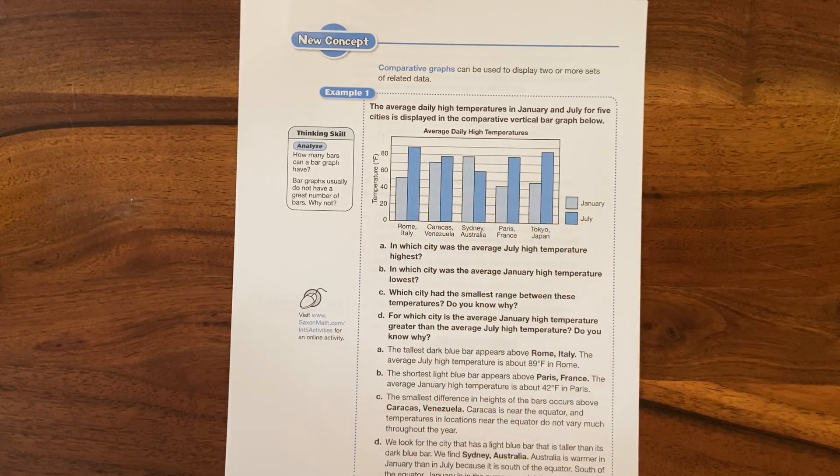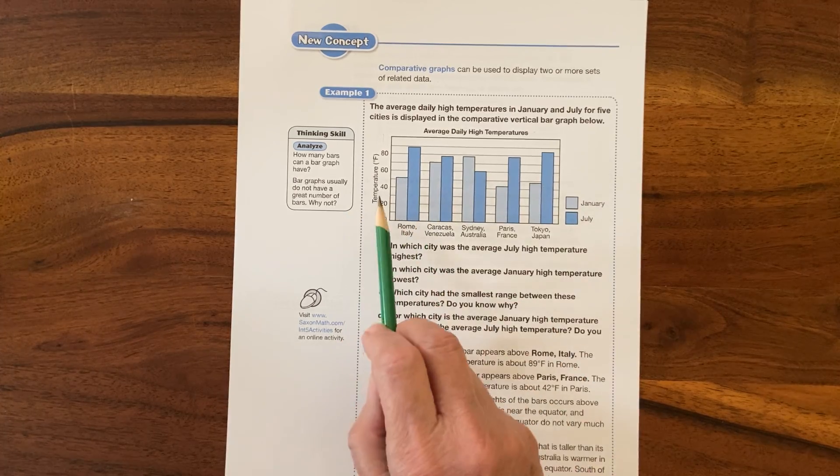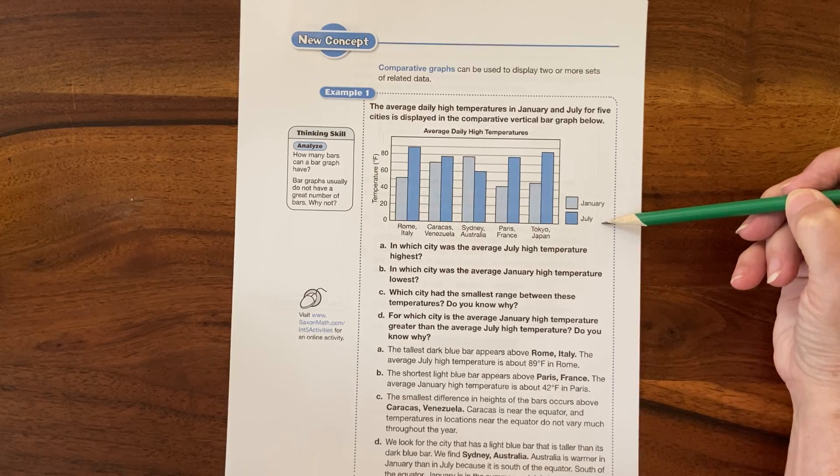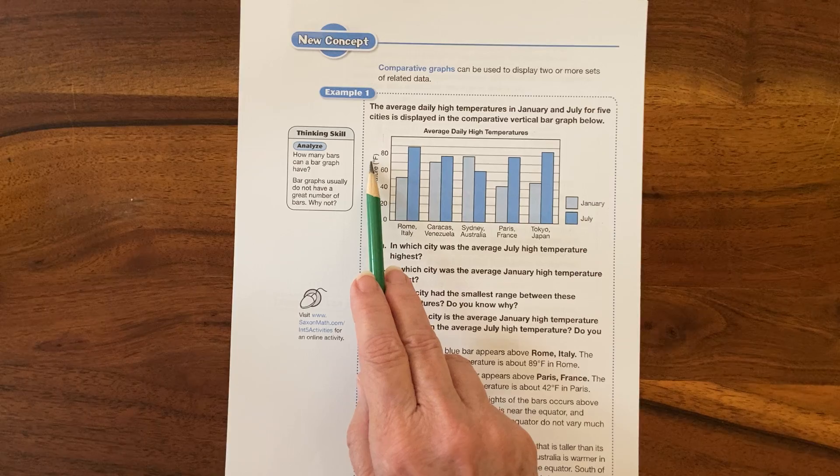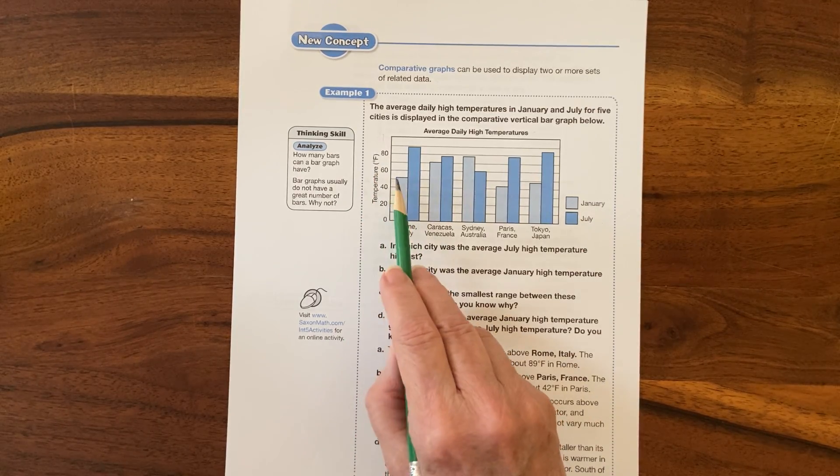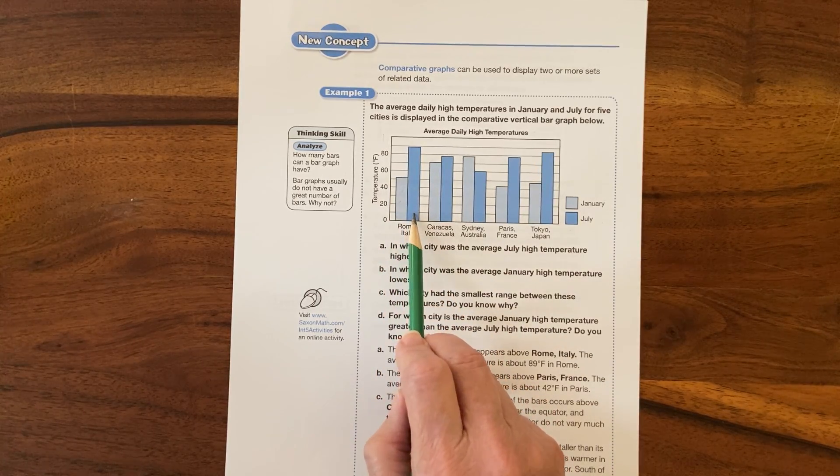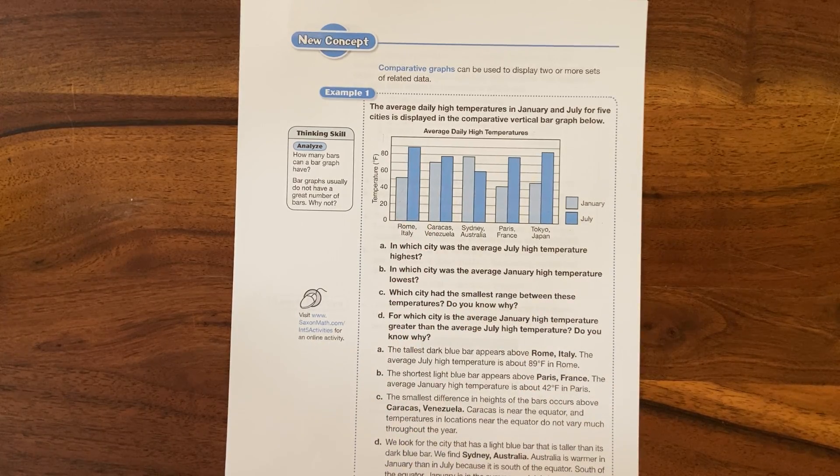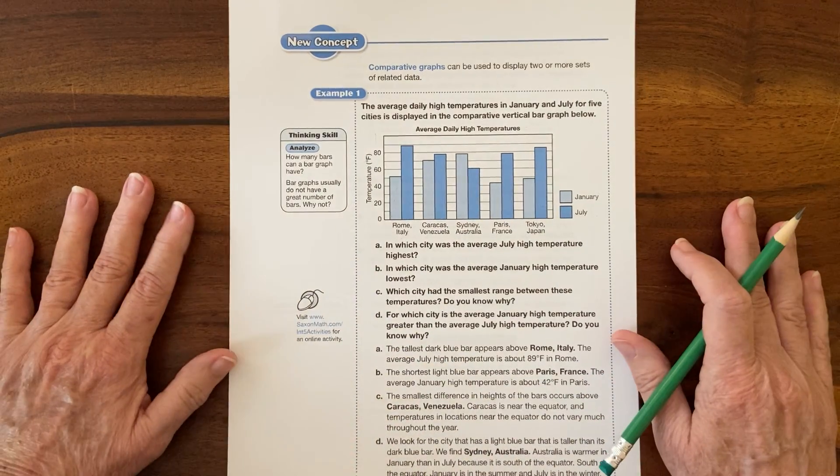We have Rome, Caracas, Sydney, Paris, Tokyo, so we're comparing five different locations. But for each location we're comparing the temperature in January and July. So in Rome in January it is 50 degrees Fahrenheit, and in Rome in July it's 90 degrees, almost - not quite 90 degrees Fahrenheit. Now we know what we're working with.